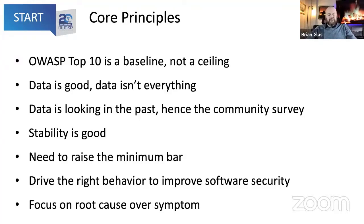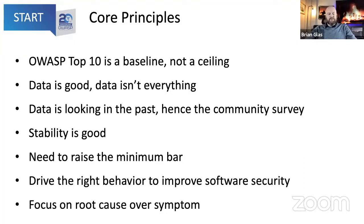That's part of why we do a community survey for the Top 10 — we started this in 2017 and continued it in 2021. Typically two of the Top 10 are picked from the survey. We ask people: what do you believe is worthy of being in the Top 10 that is not likely to show up in data, either because it's difficult to test for or it's too new? The survey is the only way to capture the recent and upcoming issues.